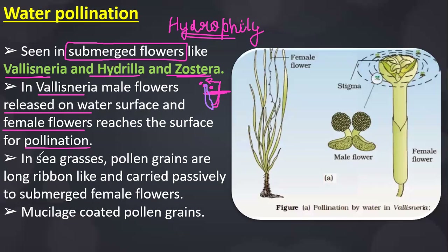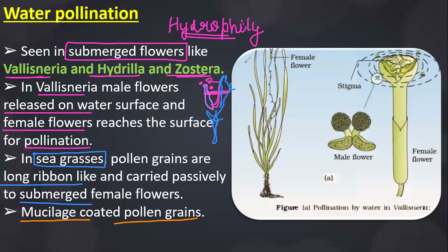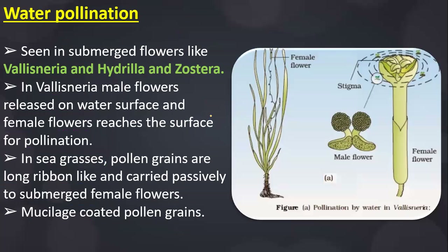In seagrasses like Zostera, the pollen grains are long and ribbon-like, and are carried passively to the submerged female flower. The male flower reaches the upper surface and releases ribbon-shaped pollen grains, but the female flower remains submerged. In aquatic plants with water pollination, the pollen grains are covered by a mucilaginous covering, not a cuticle.